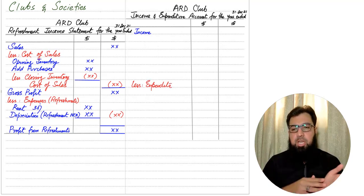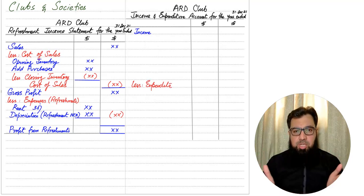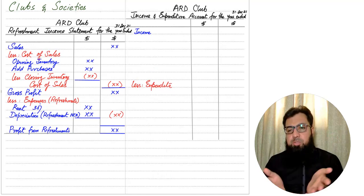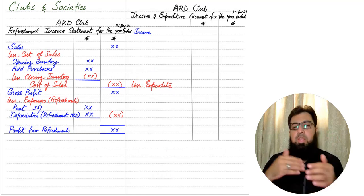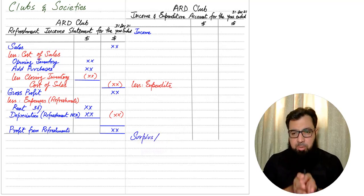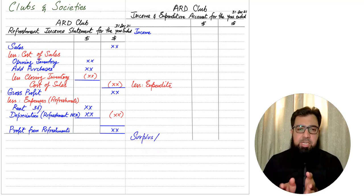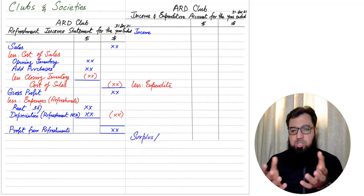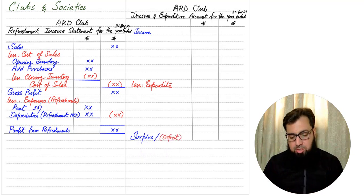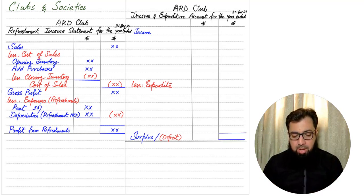There is no sales, cost of sale, return inward, return outward, carriage inward, or carriage outward here — there are only two items: income and expenses. This is the same format as an income statement for a service business, where there is only income and expense. Finally, instead of 'profit for the year' we write 'surplus', because a not-for-profit organization is not made with an objective to make profit — instead, the objective is to provide services to society. We write surplus instead of profit, and deficit instead of loss.